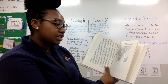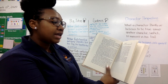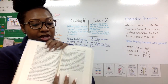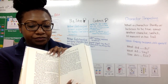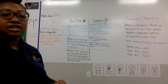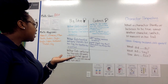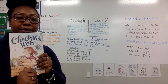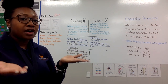Wilbur was merely suffering the doubts and fears that often go with finding a new friend. In good time, he was to discover that he was mistaken about Charlotte. Underneath her rather bold and cruel exterior, she had a kind heart, and she was to prove loyal and true to the very end. So the very end of the chapter gives me more information about Charlotte — underneath her bold and cruel exterior, she has a kind heart. So, scholars, for your big idea, you're going to find text evidence about Wilbur's perspective. He feels conflicted about Charlotte — he wants a new friend, but he doesn't know if he can like someone that kills insects. Go inside chapter five of Charlotte's Web and find your text evidence that talks about how Wilbur is conflicted, whether he wants to be Charlotte's friend or not. I'll see you next time.